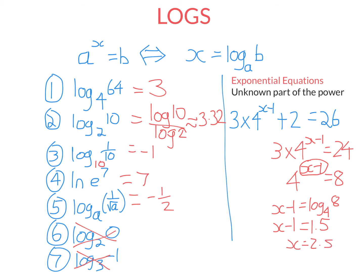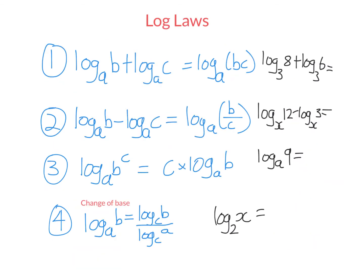Let's have a quick look at log laws. There are three laws plus the change of base formula. The first law says when you add logs of the same base, you multiply their powers. So log base 3 of 8 plus log base 3 of 6 — you keep the same base and multiply: 8 times 6 is 48. The second log law says when you subtract logs of the same base, you divide their powers. So if you have two logs of the same base being subtracted, you keep the same base and divide: 12 divided by 3 is 4.